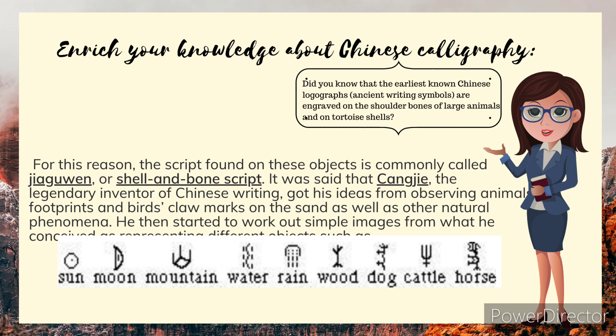Cang Jie then started to work out simple images from what he conceived as representing different objects such as sun, moon, mountain, water, rain, wood, dog, and cattle.